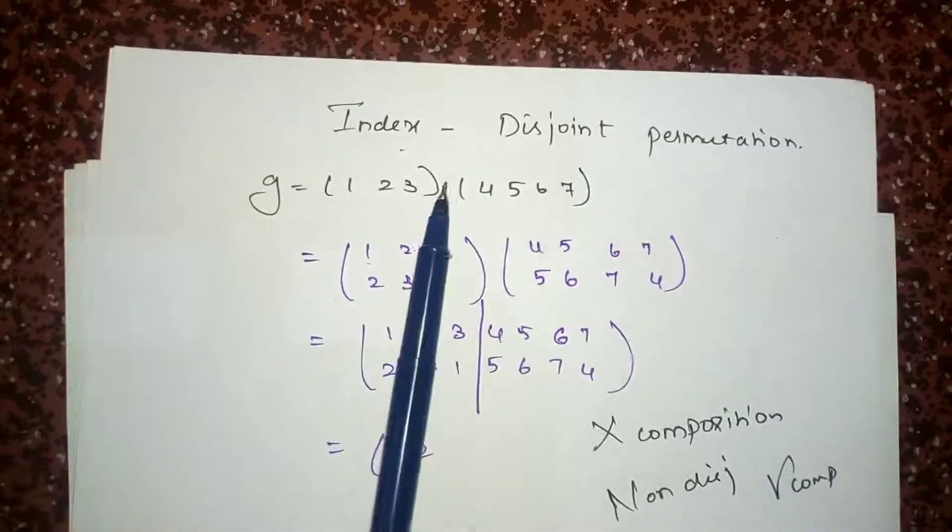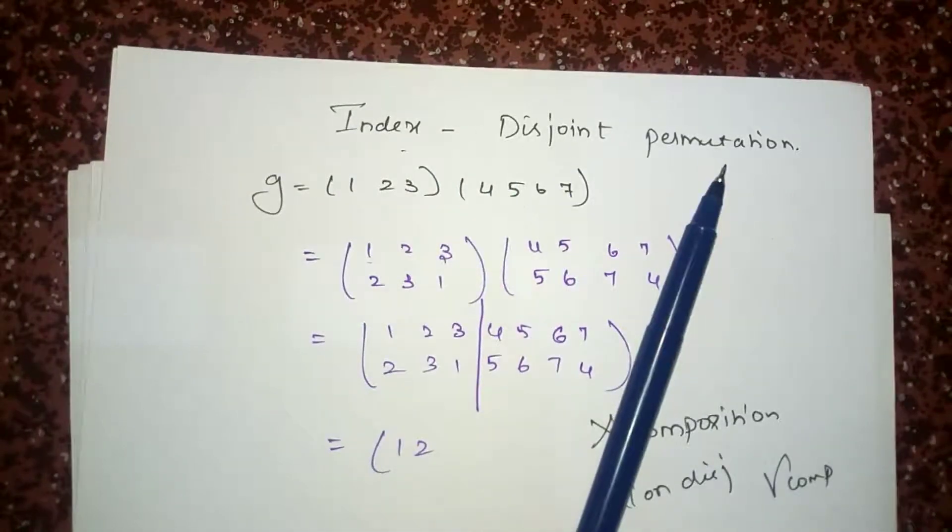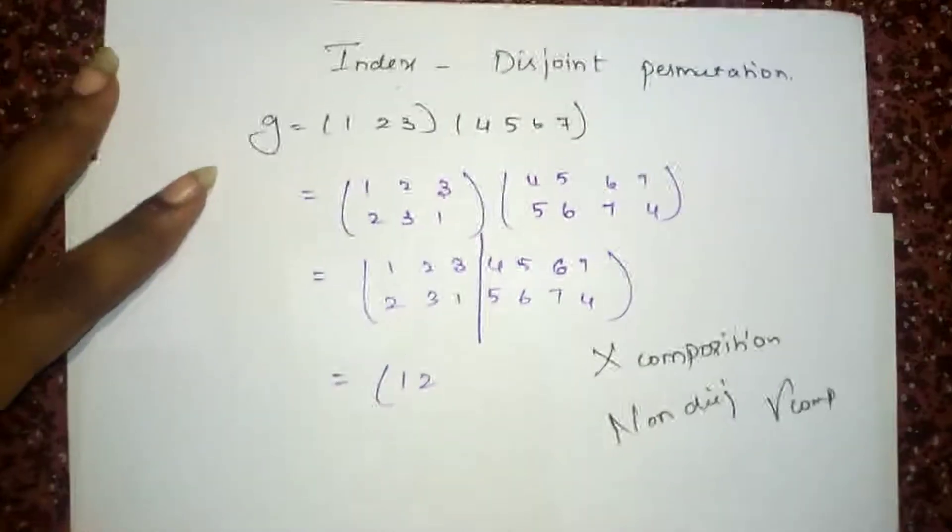But in case of non-disjoint, you have to do composition. And we have already seen how to find the order of disjoint permutation and I have provided the link in the description box.